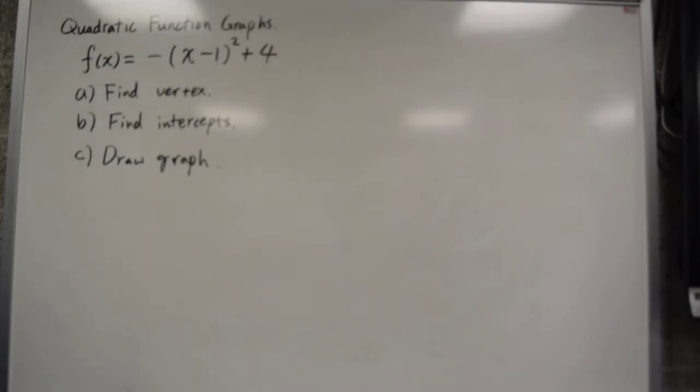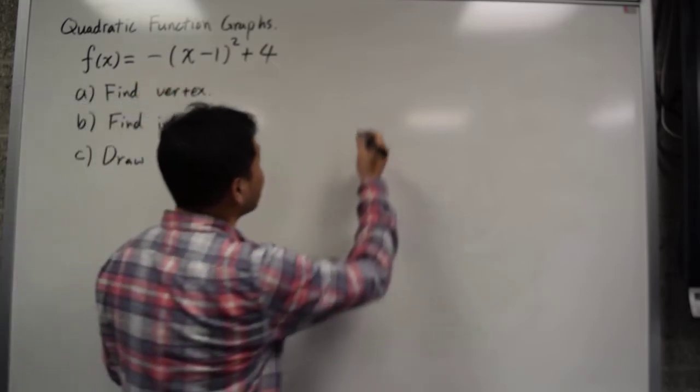If you have a function like this, how do you find the vertex? Notice that this is already in the vertex form.